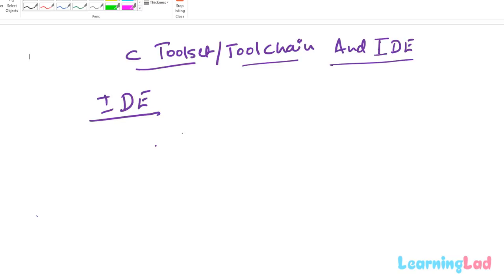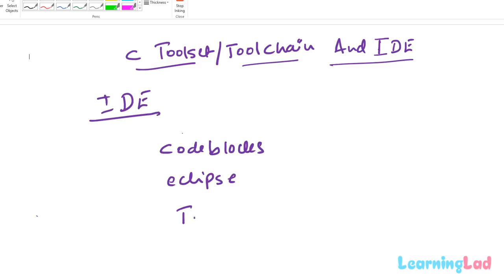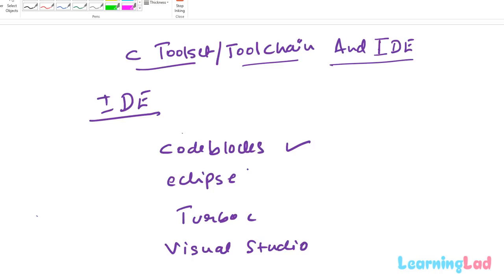The IDE simplifies the process of writing and executing a program. There are a lot of IDEs available for C programming — for example, Code::Blocks, Eclipse, Turbo C (which comes with its own IDE), and Microsoft Visual Studio, among many more. In this video series we will be using Code::Blocks because it is available on all three platforms — Windows, Linux, and Mac — and it is also lightweight, below 100 MB, so you can quickly install it and start writing programs.